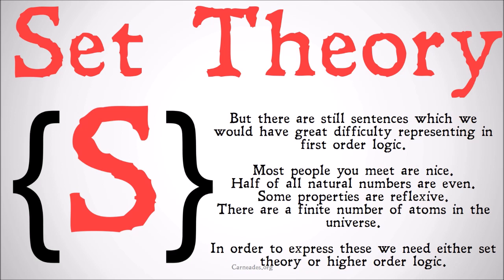Half of all natural numbers are even. This is tough because we're talking about an infinite set of things, so we can't have an infinitely long proposition, at least not yet, in an important way we understand in first-order logic.